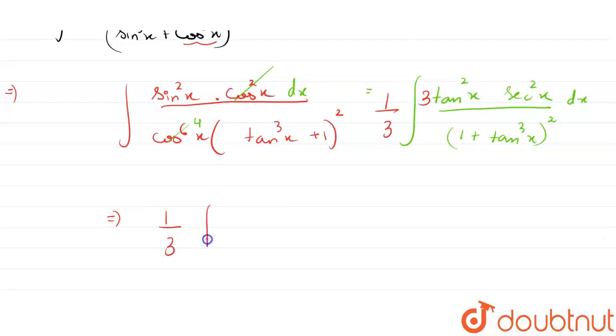1/3 times 3tan²x·sec²x divided by (1 + tan³x)² the whole square.